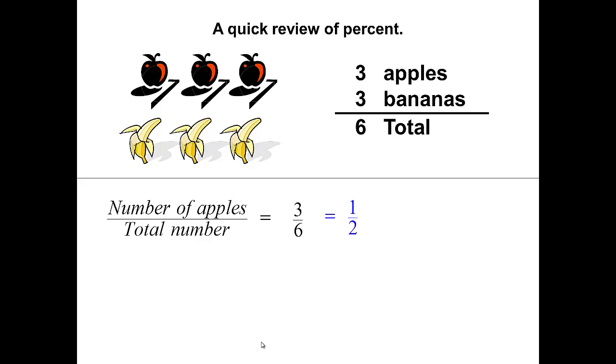If we change that to a decimal, it gives us 0.50, or 50%. And remember that to change a decimal to a percent, we simply move the decimal places two places to the right. So it would move from here to here.